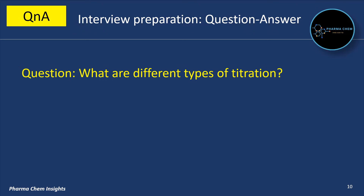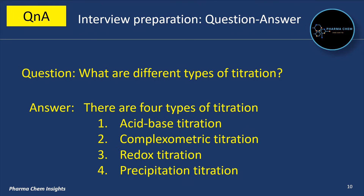What are the different types of titration? There are 4 types of titration. First is acid-base titration. Second is complexometric titration. Third is redox titration. Fourth is precipitation titration.